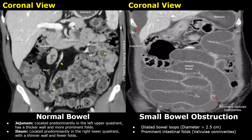The duodenum is seen up here in the center. In this image we can clearly see dilated bowel — the dilated bowel loops are filled with hypodense fluid, and the diameter is greater than 2.5 centimeters. You can also see prominent intestinal folds; these folds are called valvulae conniventes. Normally they are not this prominent, but when the bowel loops are dilated these folds are more clearly seen.